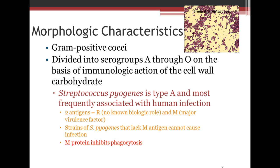Here's a picture of that gram-positive cocci — little balls that are dark purple. They're divided into serogroups A through O on the basis of their immunological interaction with the cell wall carbohydrate. Streptococcus pyogenes is type A and the most frequently associated with human infection. There are two antigens: an R antigen and an M antigen. The M is the major virulence factor. Strains of strep pyogenes that lack the M antigen cannot cause infection, and the M protein is able to inhibit phagocytosis.